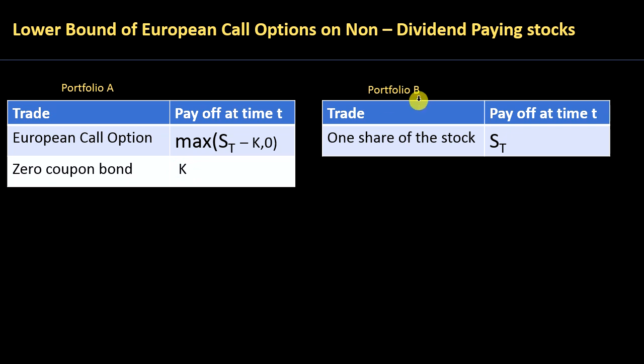Portfolio B is simply holding one share of this same stock, and therefore at time T that share will have grown to S_T. For example, if you have a stock worth fifty dollars today, in six months time it will grow at the risk-free rate, giving you S_T.